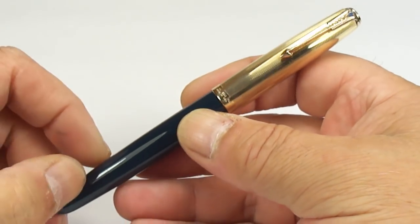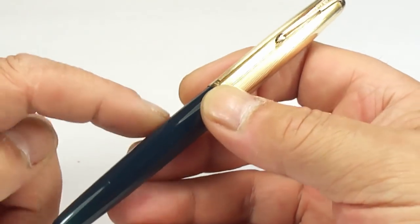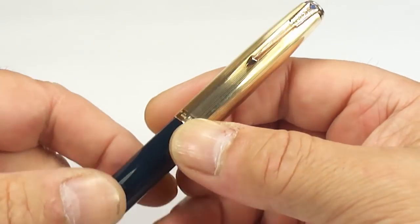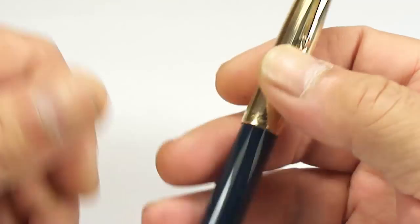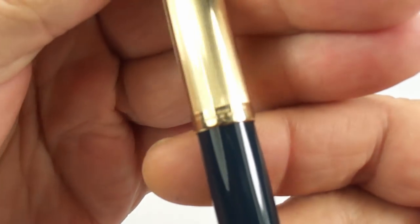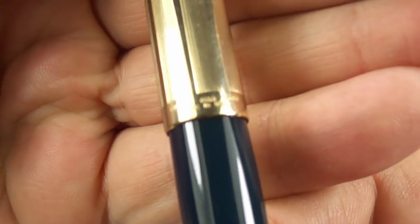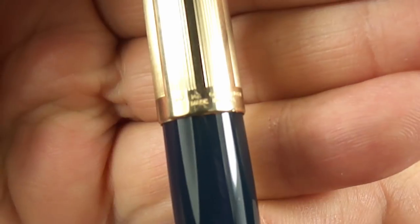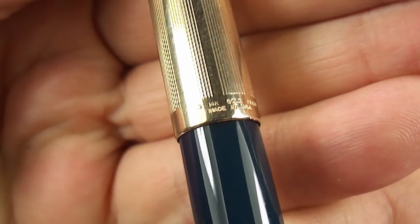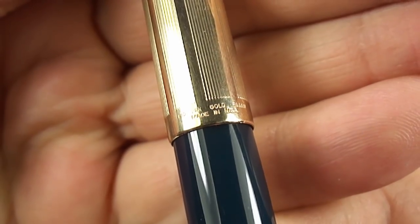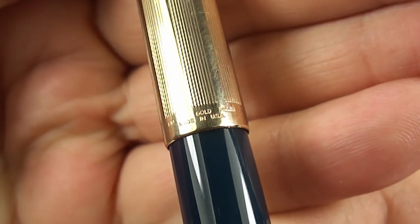We'll show you that in a moment. This particular one, as we said, is cedar blue. It comes with a gold-filled cap. If I bring it quite close, you'll see the cap imprint reads 1 in 10, 14 carat gold filled.